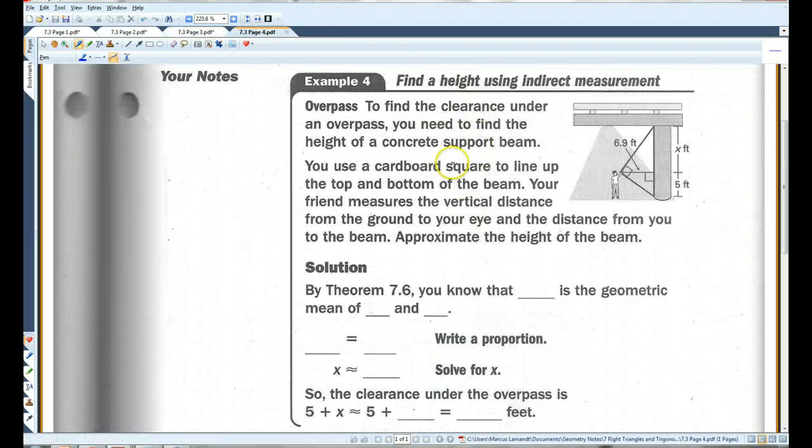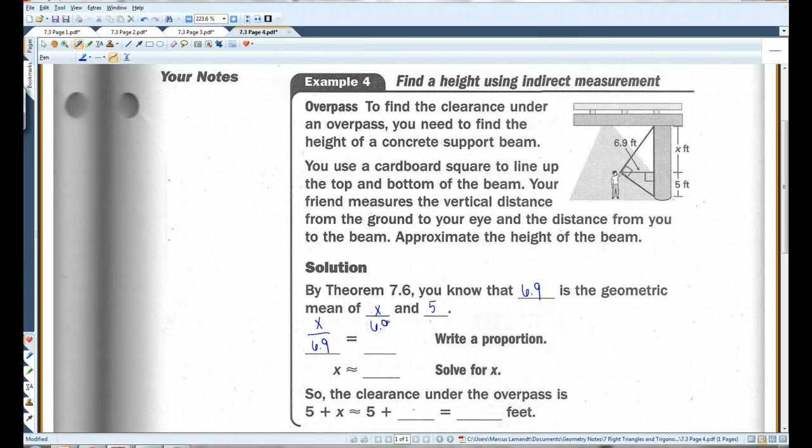Let's do an example. To find the clearance under an overpass, you need to find the height of a concrete support beam. You use a cardboard square to line up the top and bottom of the beam. Your friend measures the vertical distance from the ground to your eye and the distance from you to the beam. Approximate the height of the beam. By theorem 7.6, you know that 6.9, the altitude of the given triangle, is the geometric mean of X and 5. Remember, the altitude divides the hypotenuse into two segments, and the altitude is the geometric mean of those two segments. So 6.9 is the geometric mean of this and this.